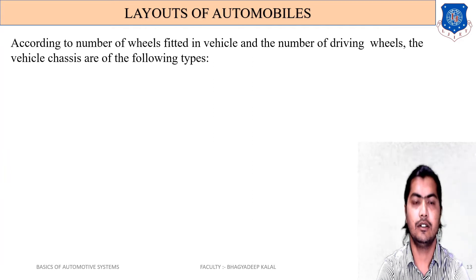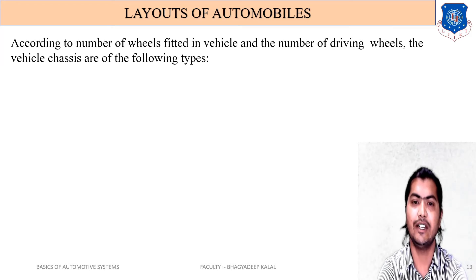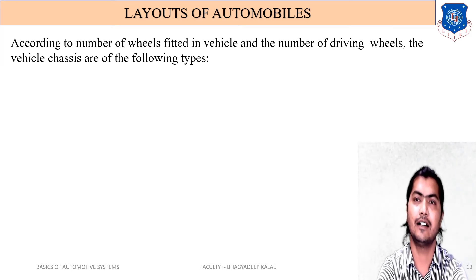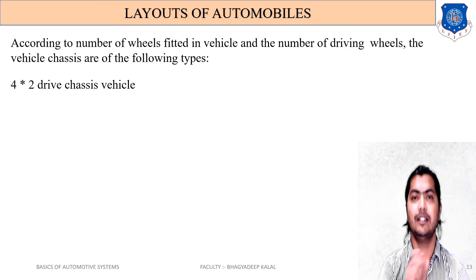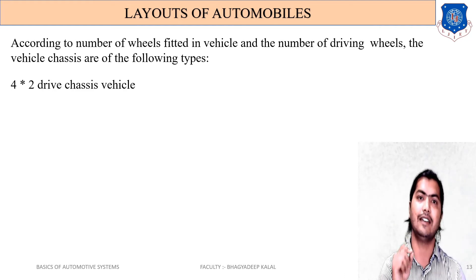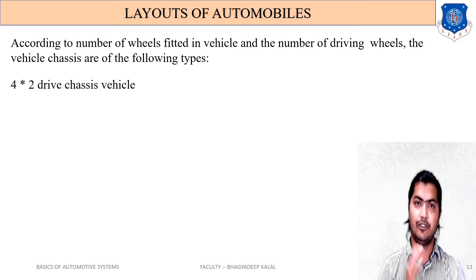The next classification of the automobile system is according to the number of wheels fitted in the vehicle and the number of driving wheels. The vehicle chassis are of the following types. First is the 4×2 drive chassis system. Sometimes a vehicle is described with a notation like 4×2 or 4×4. The meaning of 4×2 is that a vehicle has four wheels and two driving wheels.